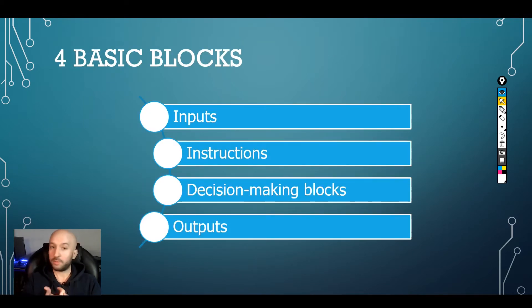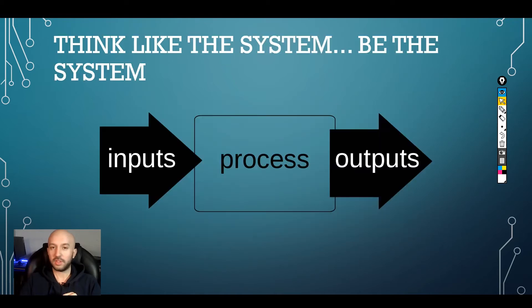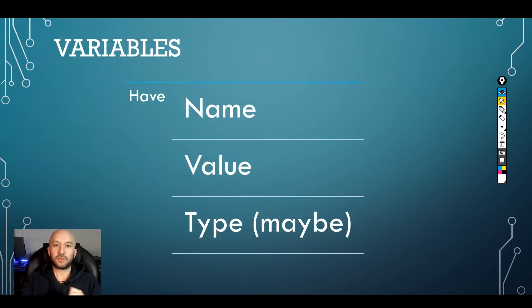We already saw what inputs and outputs are. We are missing instructions and decision making blocks. Before we can define those two we need to talk about variables. Variables are like boxes. You can imagine it like a box in real life.